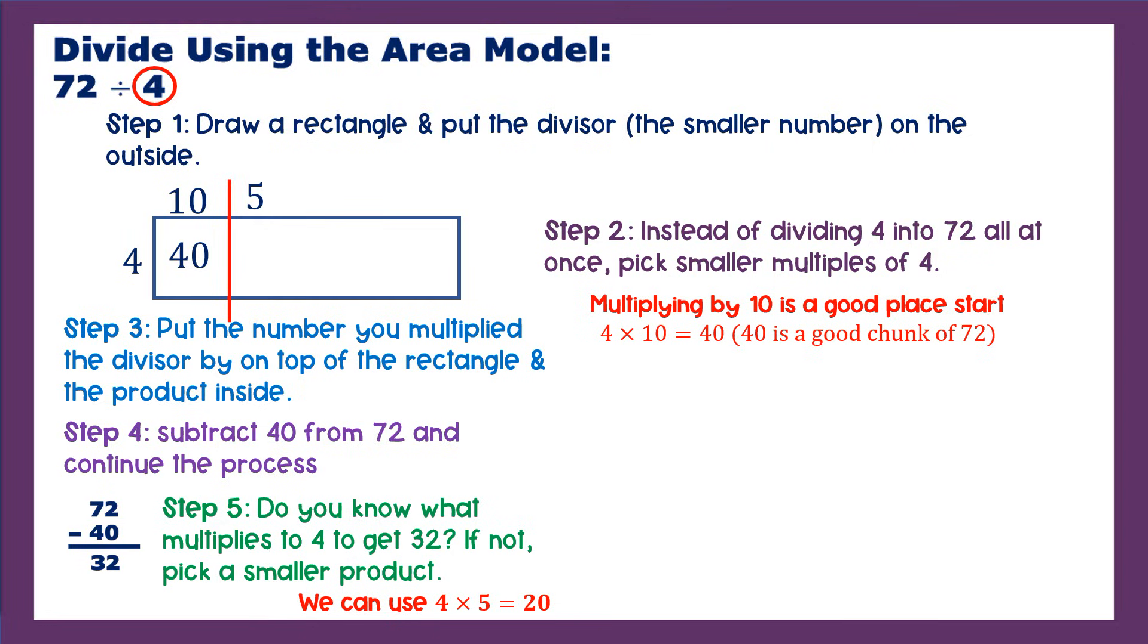So we're going to put 5 up there. So we're going to say 4 times 5 is what? It is 20. We got to put 20 inside the box. So what have we divided into already? We have divided into 60. 40 plus 20 is 60. We're still not at 72, so we've got to subtract again. 32 minus 20 is 12.